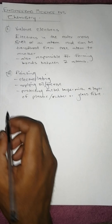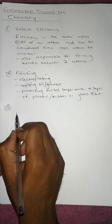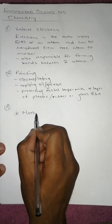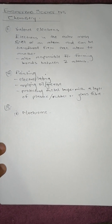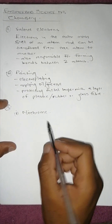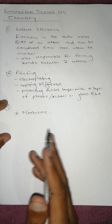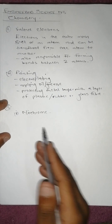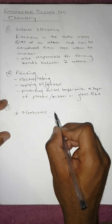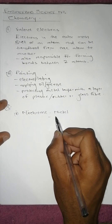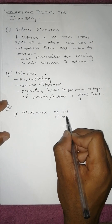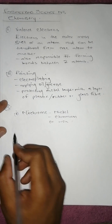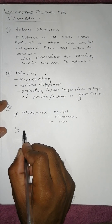Question three says we should name the components of each. We have Nichrome — the name itself tells you it's a composition of two elements: nickel and chromium. So it's going to be nickel and chromium. Sometimes it also has iron, so you can include iron.